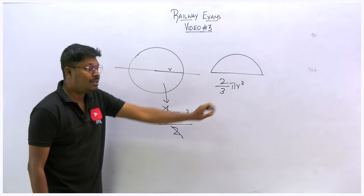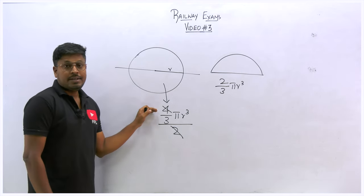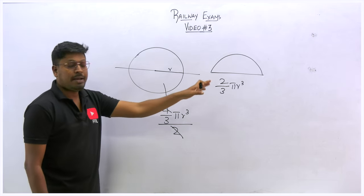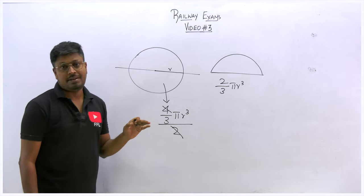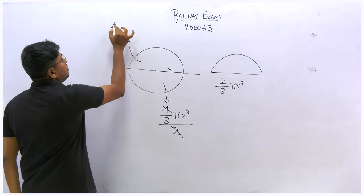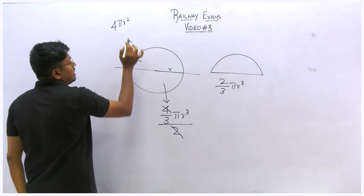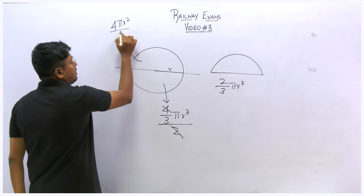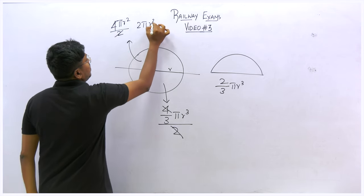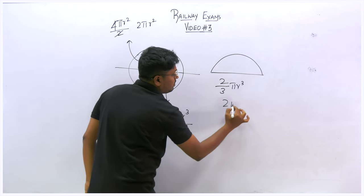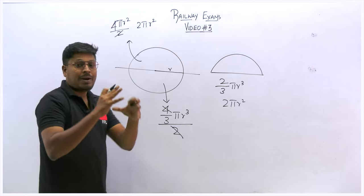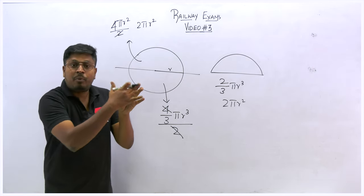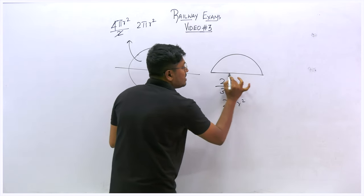So 4/3 πr³ is for sphere; divide by two and 2/3 πr³ is the volume of hemisphere. For the total surface area: the sphere's total surface area is 4πr², divided by two gives 2πr². But when you cut a solid sphere in half, you get a bottom circular surface, so you add the area of that circle.